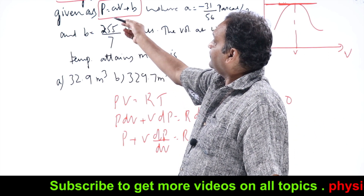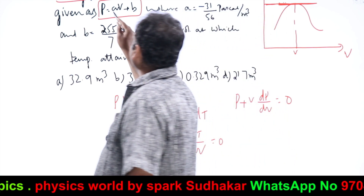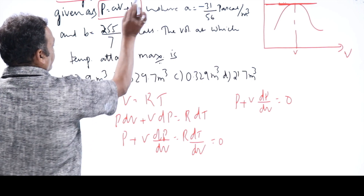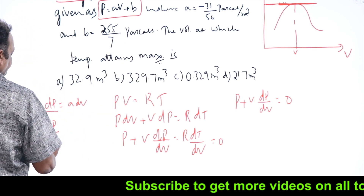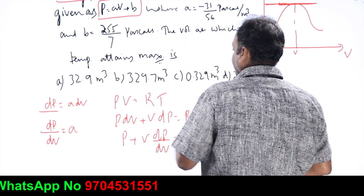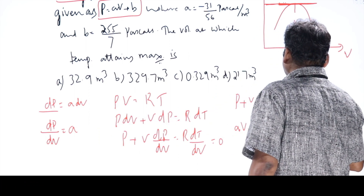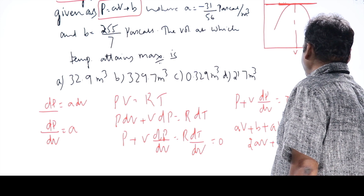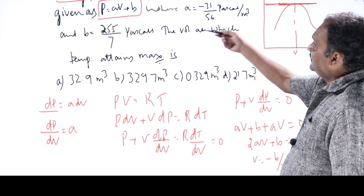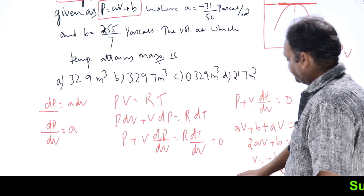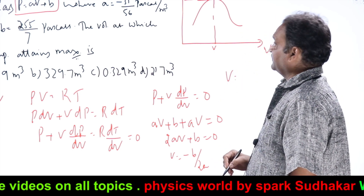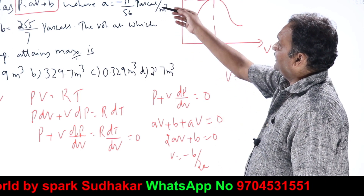Now dP/dV comes from the given relation P = AV + B. Differentiating: dP/dV = A. Substituting back: P + V·A = 0, and since P = AV + B, we get AV + B + AV = 0, which gives 2AV + B = 0, so V = −B/(2A). At this volume, temperature becomes maximum.